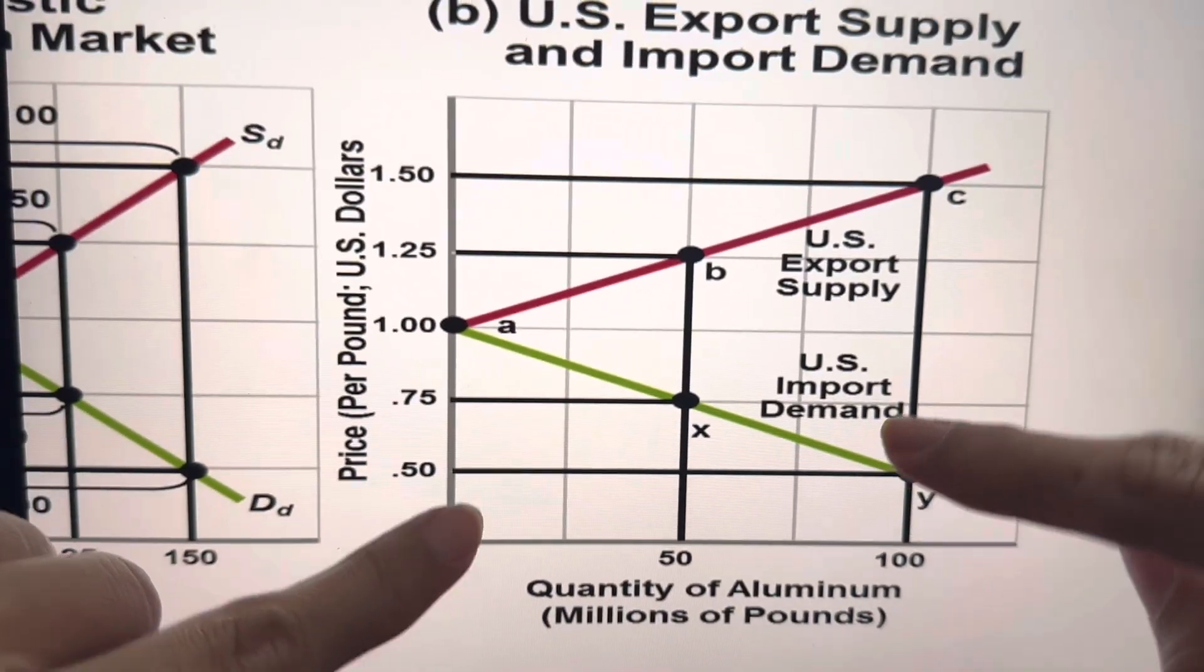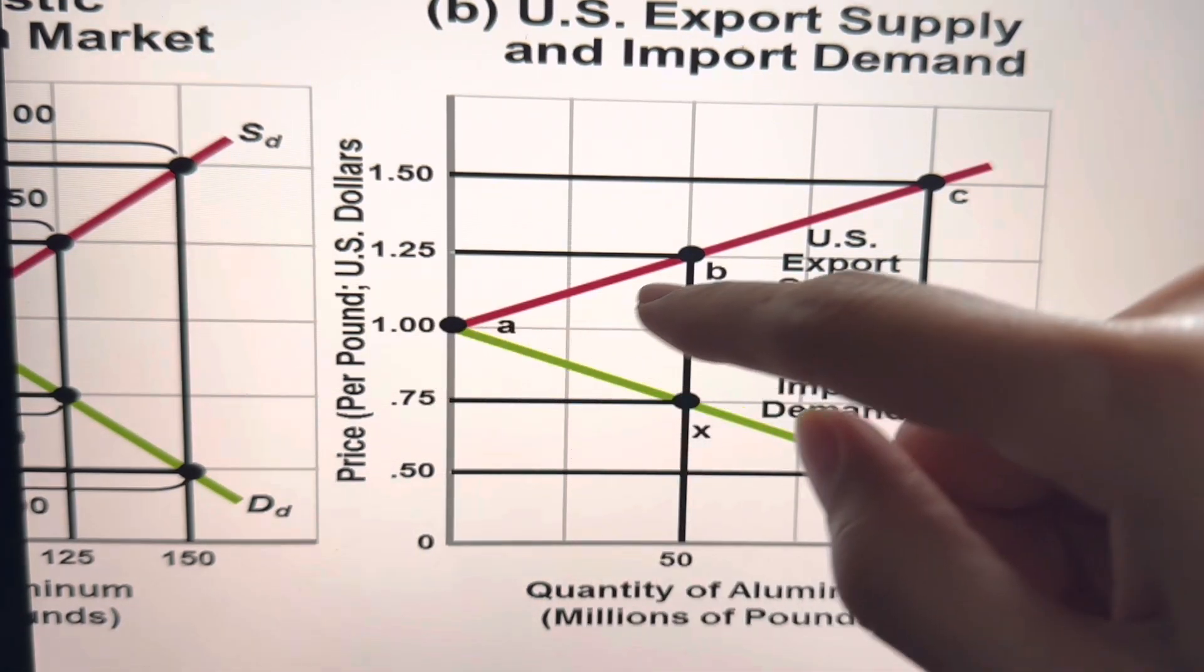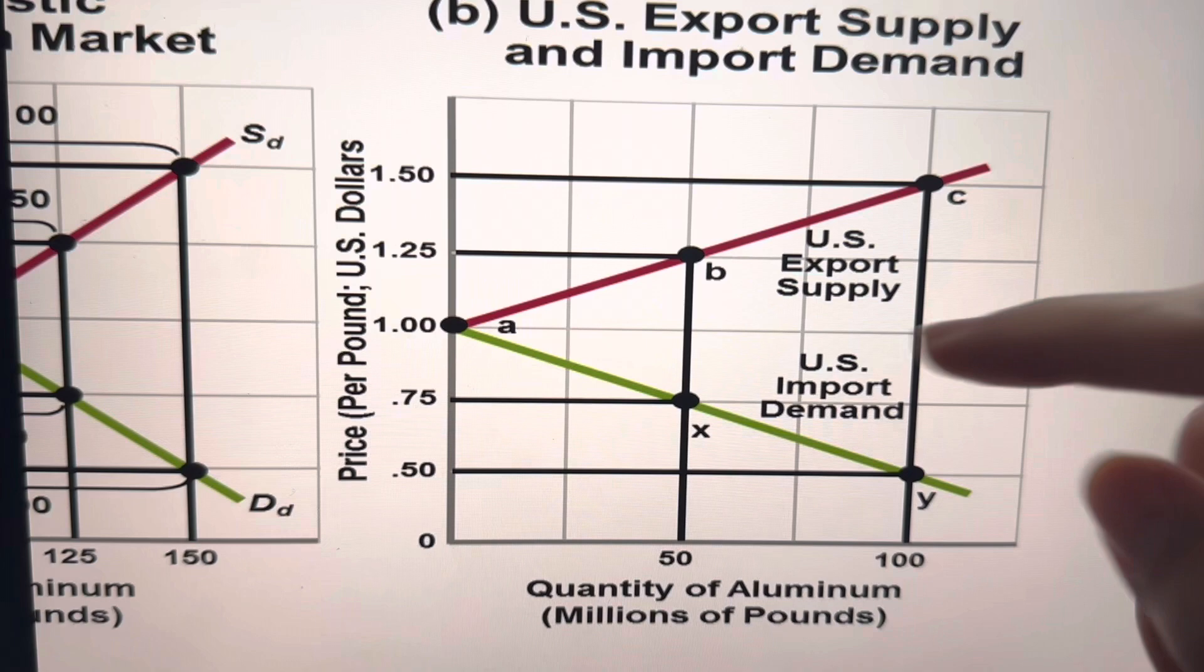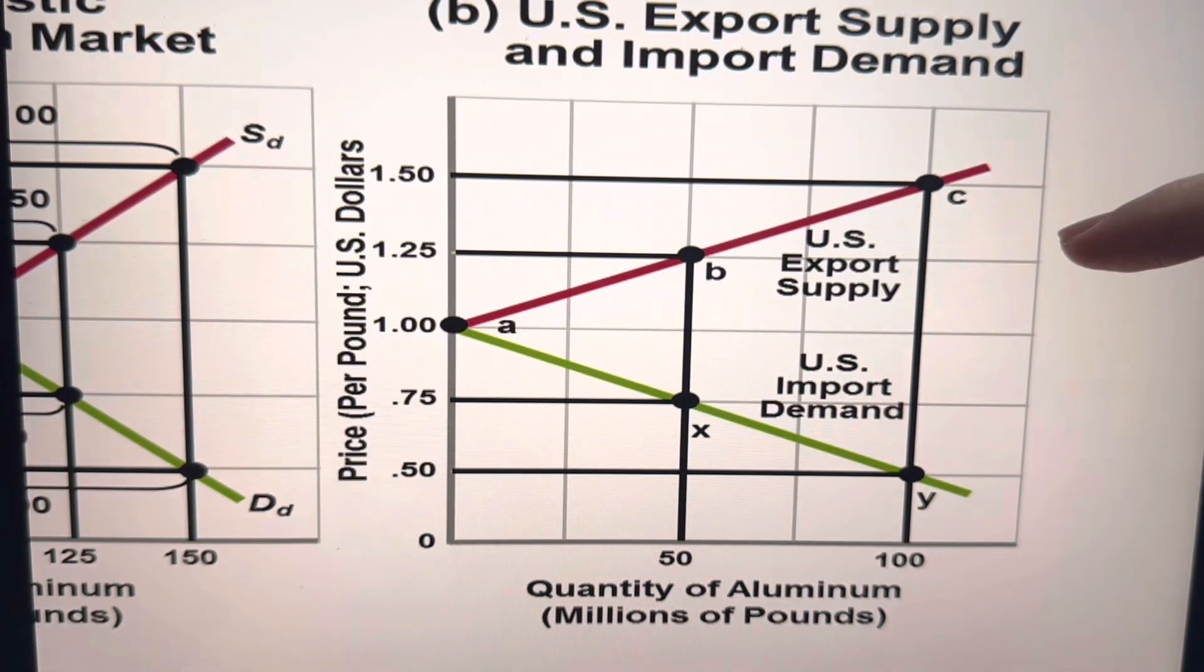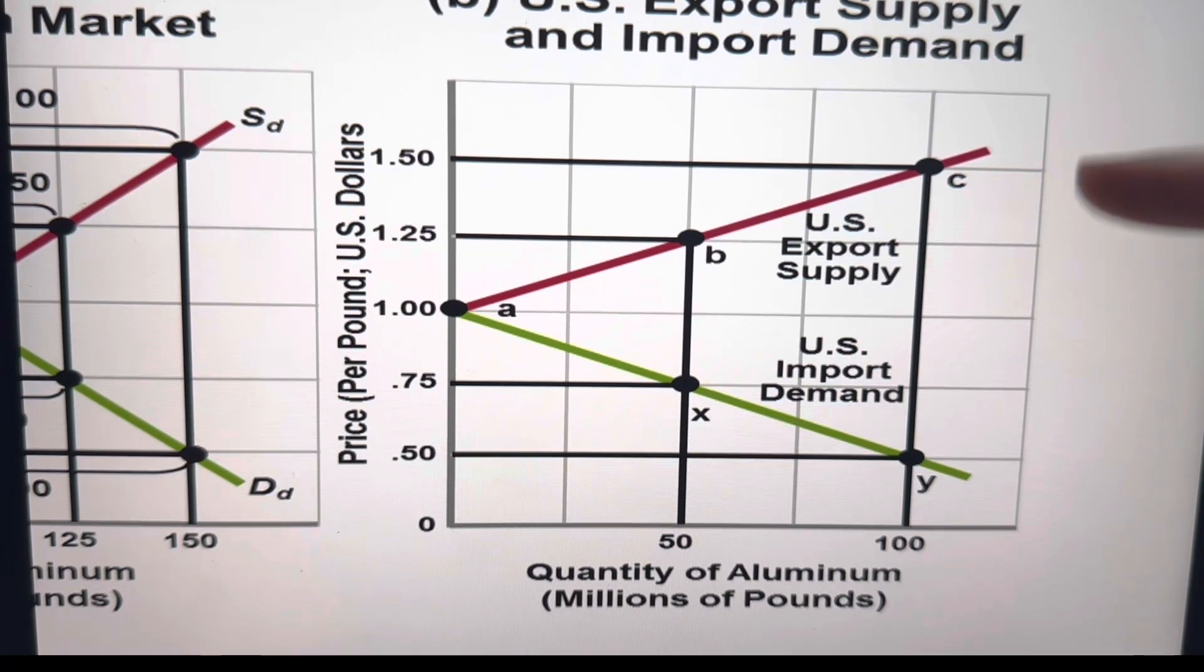Similarly, like before, if you just stretch or extend the point from the domestic price to the points of export, you'll have the U.S. export supply curve. So this is basically how the U.S. export supply and import demand curves look like.